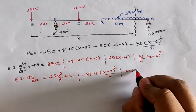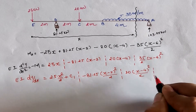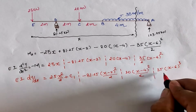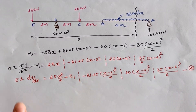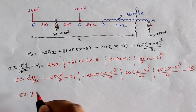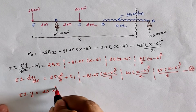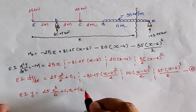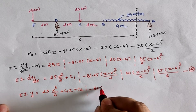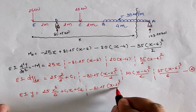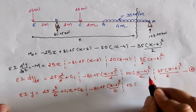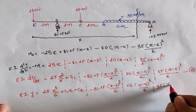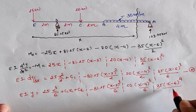Continuing the integration: −20·(x − 4)²/2, and −(35/2)·(x − 6)³/3 which simplifies to −(35/6)·(x − 6)³. Integrating again gives EI·y = 25·x³/6 + C₁x + C₂ − 81.25·(x − 2)³/6 − 20·(x − 4)³/6 − 35·(x − 6)⁴/24.